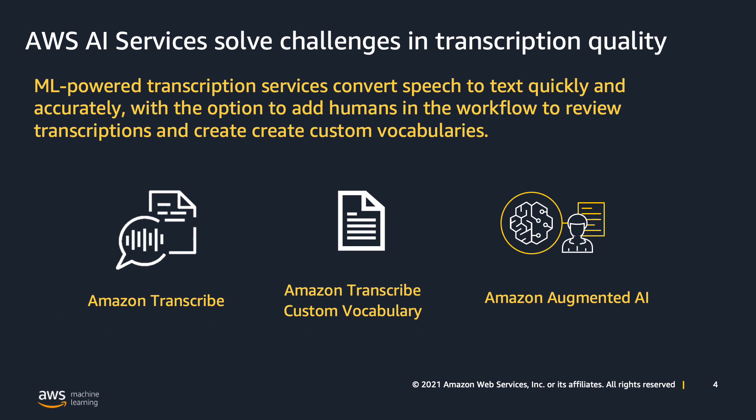Amazon Augmented AI and Amazon Transcribe can help solve the problem. These ML-powered transcription services can convert speech-to-text quickly and accurately, and Augmented AI can help add a human review element so that you can quickly identify words that Amazon Transcribe may not correctly transcribe. You can add them to a custom vocabulary to improve transcription results around those domain-specific terms.